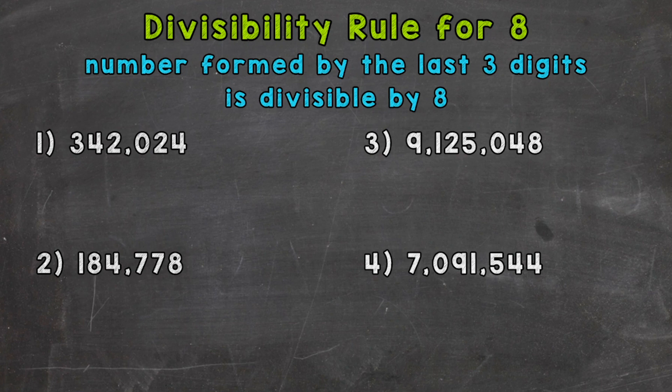For number 1, we have 342,024. So the last three digits are 0, 2, and 4, so we get 24. That's the number that is formed. So if 24 is divisible by 8, that means the number 342,024 is divisible by 8.